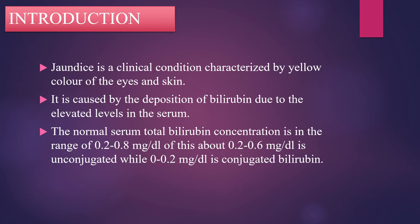Of this, about 0.2 to 0.6 mg per dl is unconjugated, while the range of 0 to 0.2 mg per dl is conjugated bilirubin.